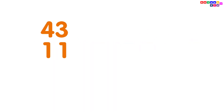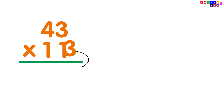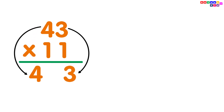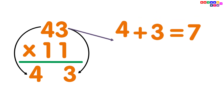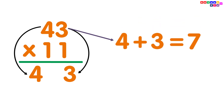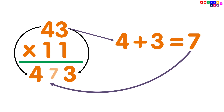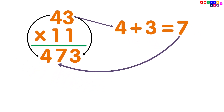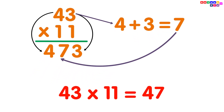43 multiplied by 11. Simply write the digits 4 and 3. Then add the digits: 4 plus 3 equals 7. Put the 7 between digits 4 and 3, and you will get your answer 473. So, 43 multiplied by 11 is equal to 473.